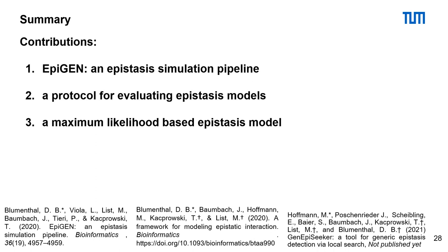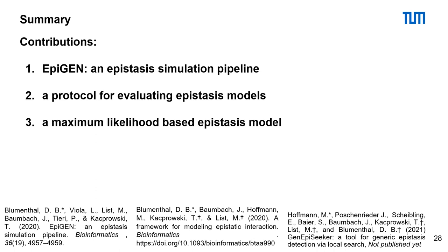Thirdly, a new epistasis model, the maximum likelihood model which calculates maximum likelihood distributions for each cell of a penetrance table. And lastly, GnEBseeker. GnEBseeker builds a PPI-based SNP-SNP interaction network and uses local search to find epistatic interactions.